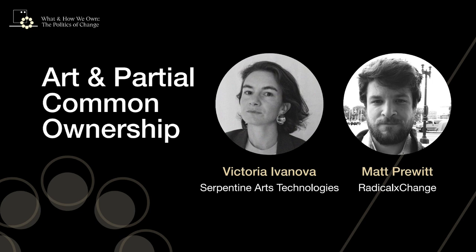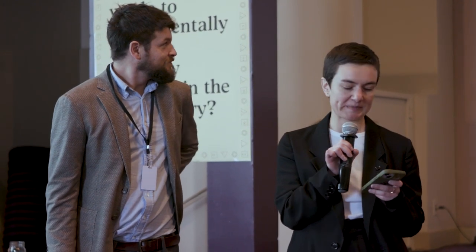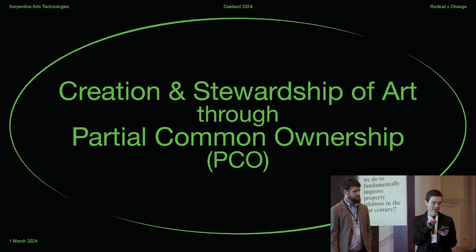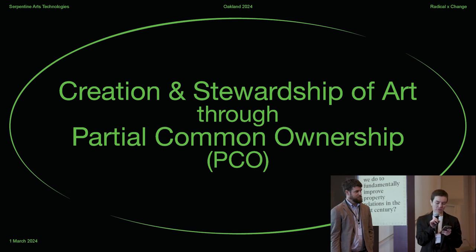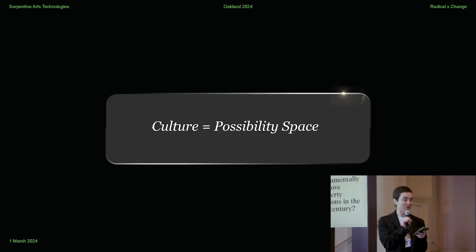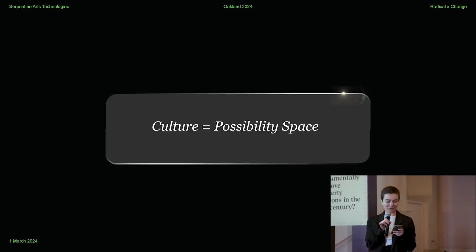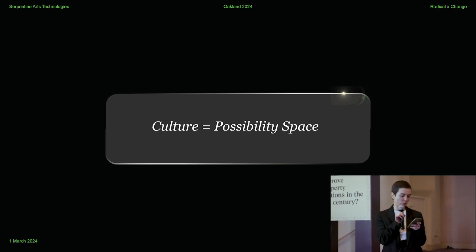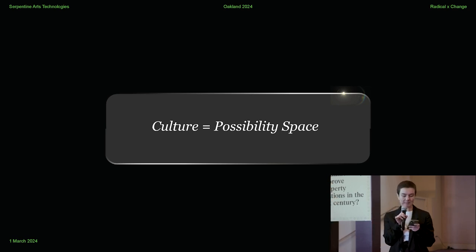Hi everyone, good to be here. My name is Victoria and I'm R&T's strategic lead at an arts organization based in London called Serpentine. Together with Radical Exchange and an arts-led organization called Aerocene Foundation, we're currently working on developing, testing, and offering to the wider cultural ecosystem a model for the creation and stewardship of art called Partial Common Ownership.